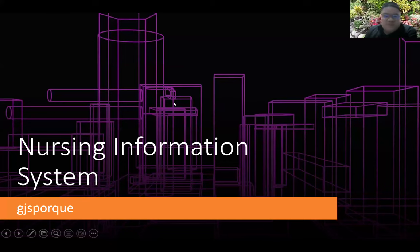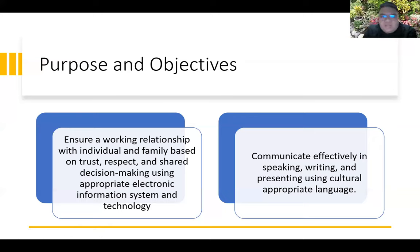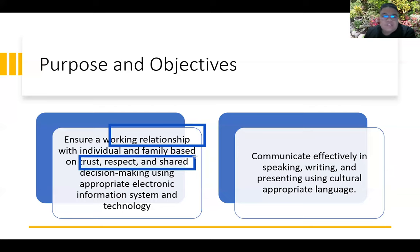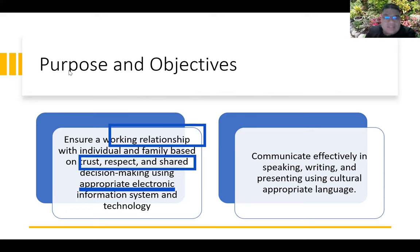This discussion is for nursing information systems. The purpose and objective of a nursing information system is to ensure a working relationship with individuals and families based on trust, respect, and shared decision making, using appropriate electronic information systems and technology. Technology is intended to improve our working relationships, contrary to the common complaint that nurses are too busy with technology and neglect patients.